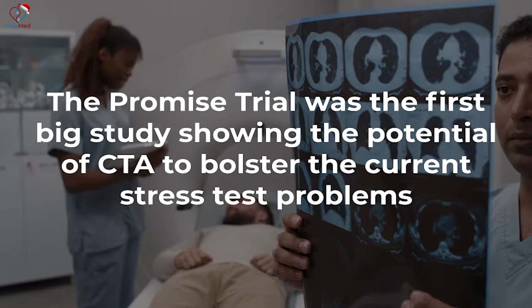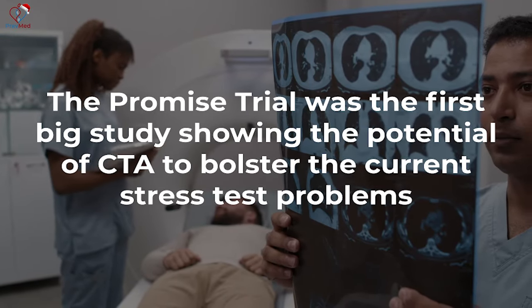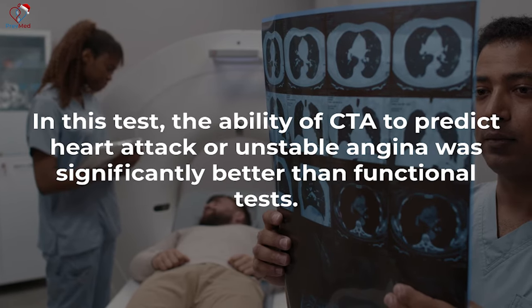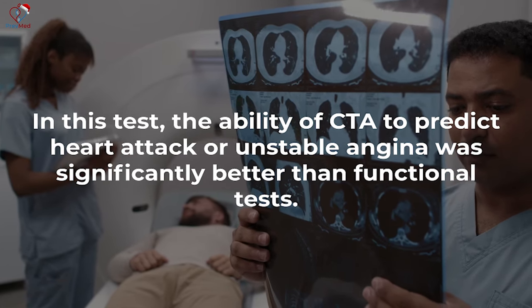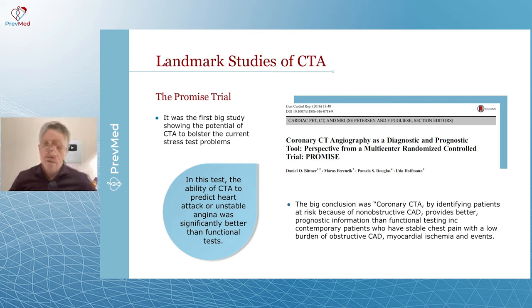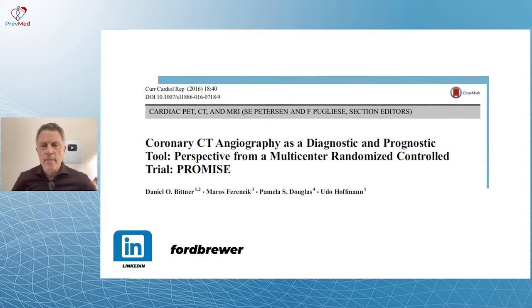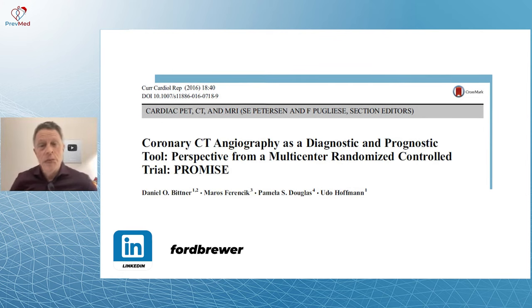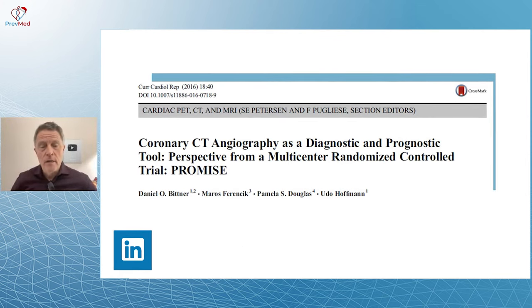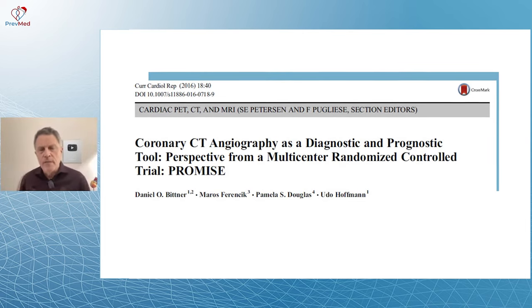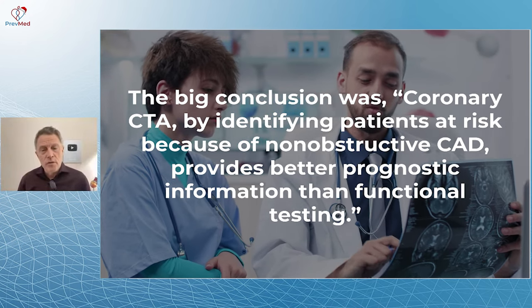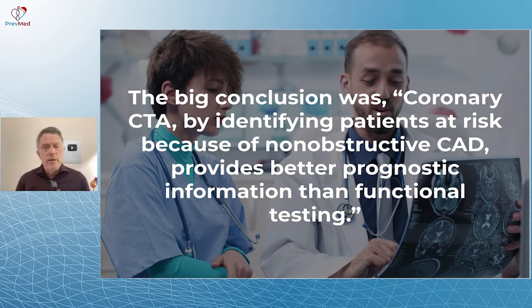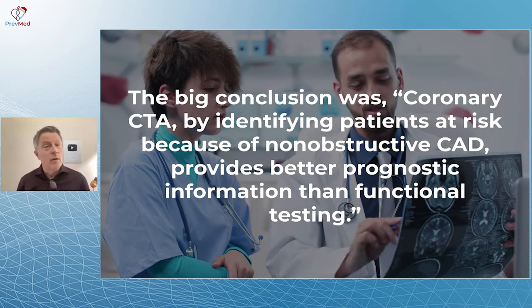Now let's talk about the PROMISE trial — the first big study showing the potential of CT angiogram to address current stress test limitations. The ability of CT angiogram to predict heart attack or unstable angina was significantly better than functional tests, meaning stress tests. Here's the article: 'Coronary CT Angiography as a Diagnostic and Prognostic Tool: A Perspective from a Multicenter Randomized Control Trial PROMISE.' The big conclusion was that coronary CTA, by identifying patients at risk because of non-obstructive coronary artery disease, provides better prognostic information than functional testing — in other words, stress testing.